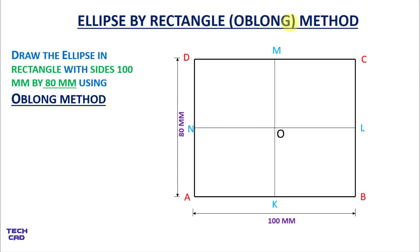Now divide this DN line into equal divisions. Students, you can take any number of equal divisions, but you have to take at least three. I will take four equal divisions in this case, because my vertical line total is 80 mm and DN is 40 mm, so I will divide it into four equal divisions.